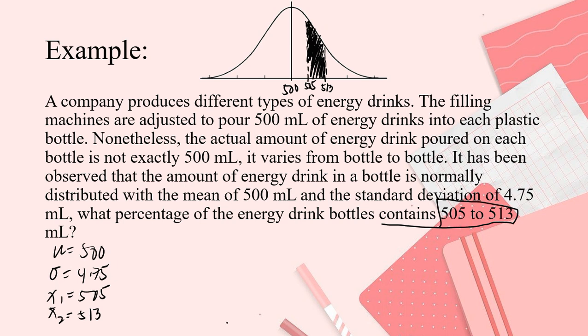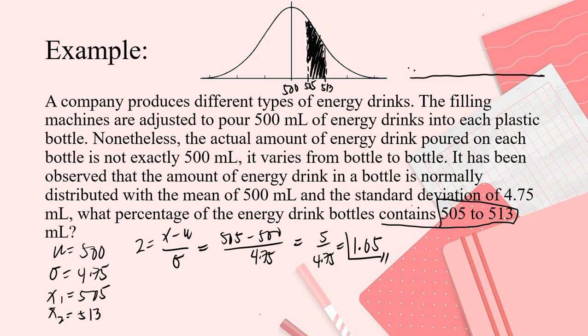So, now, let's solve for the value of Z. So, Z is equal to X minus mean divide by SD. And that is, your first X. 505 minus 500 divide by 4.75. And that is 5 divide by 4.75. So, divide the two that is 1.05. So, we will make another normal distribution curve. This is 0, 1.05. So, let's say it's here, here.